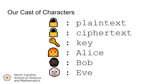A quick refresher on our cast of characters we'll be using today: we've got the unlocked lock emoji for plain text, the closed lock for cipher text, the key for a key. And then we've got our three actors — Alice and Bob, who are trying to send messages back and forth to each other, and Eve, who is trying to intercept and read those messages.